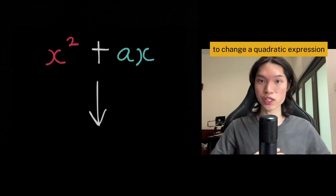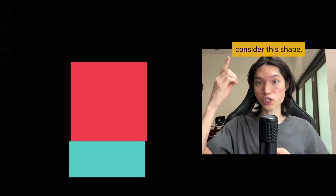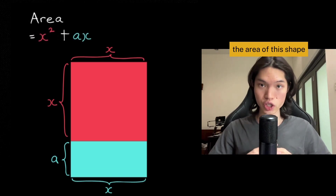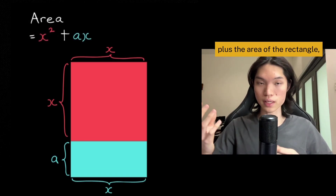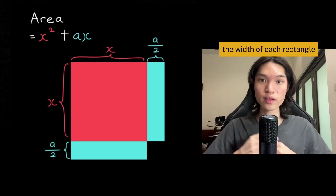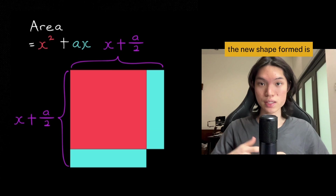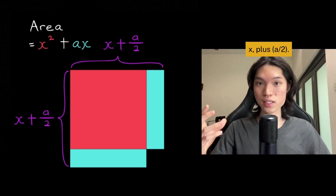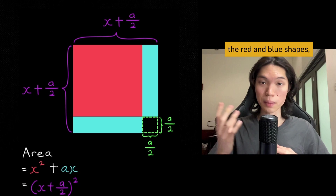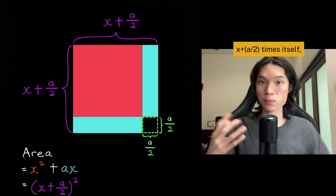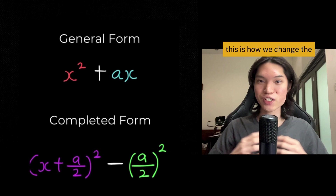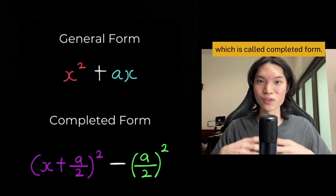Completing the square is a process to change a quadratic expression like this into that. Consider this shape made up of a square with sides of length x and a rectangle with a width of a and a length of x. The area of this shape is x times itself plus a times x. We can split the rectangle into two and place one to the side of the square, so the width of each rectangle is now a over 2. The new shape formed is almost a big square with sides of length x plus a over 2. To complete the square, we add a small square with sides of length a over 2. The new area can be described by the area of the bigger square, x plus a over 2 times itself, minus the area of the smaller square, a over 2 times itself. This is how we change the expression into completed form.